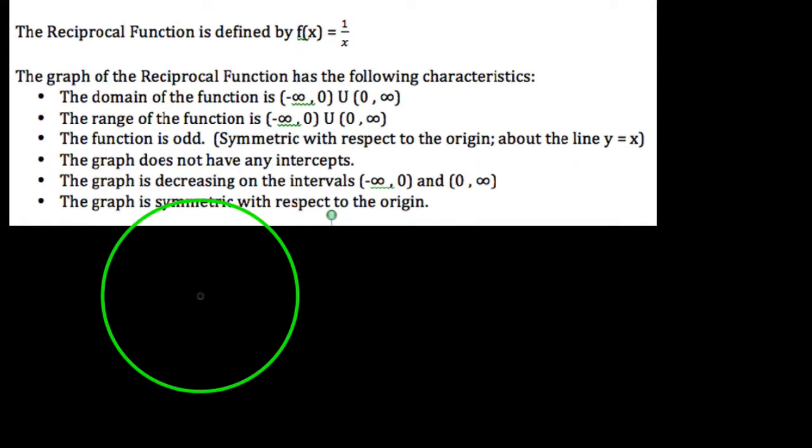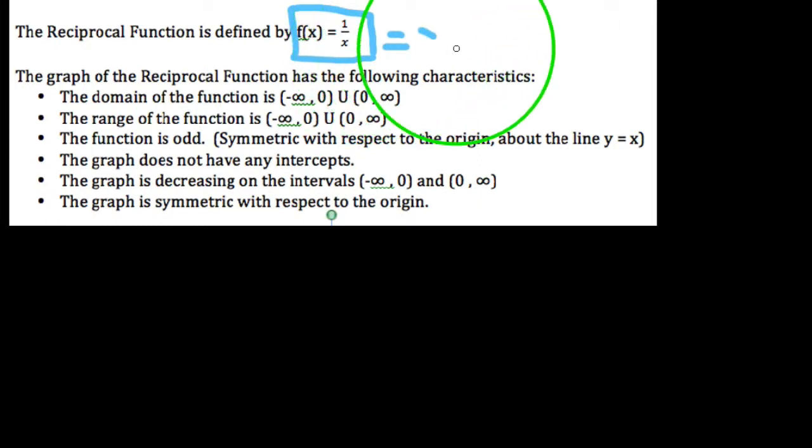In this video, we're going to talk about the parent reciprocal function and its basic characteristics. This is one of our parent functions. We want to memorize its shape first before we start transforming it. The function is f(x) equals 1 over x. Another way to write this is x to the negative 1.